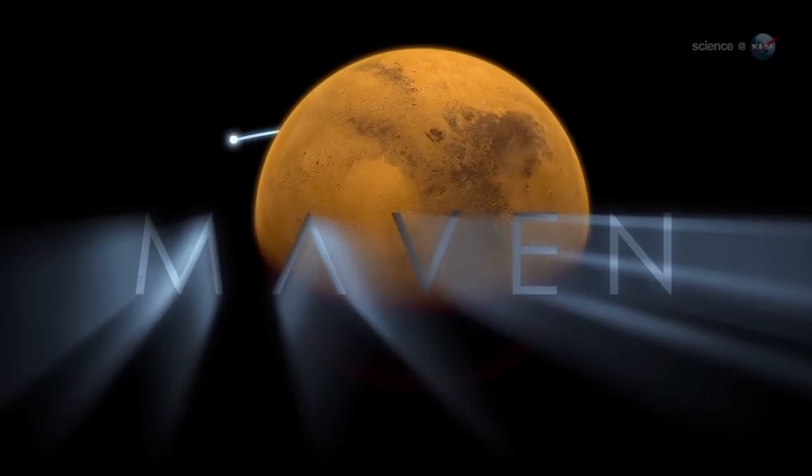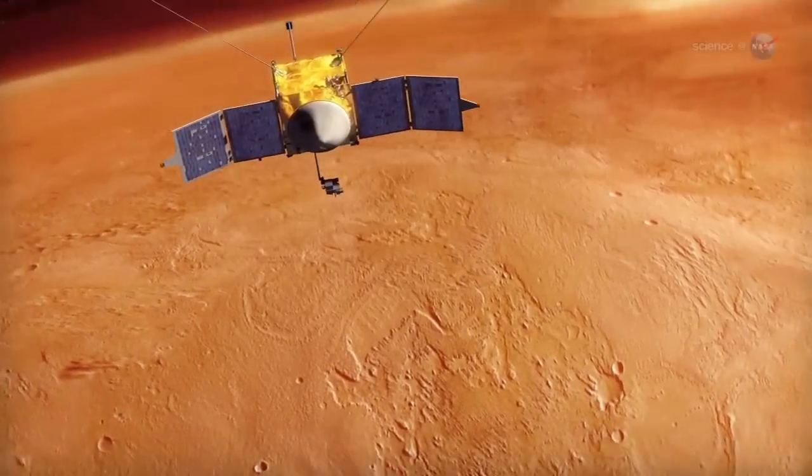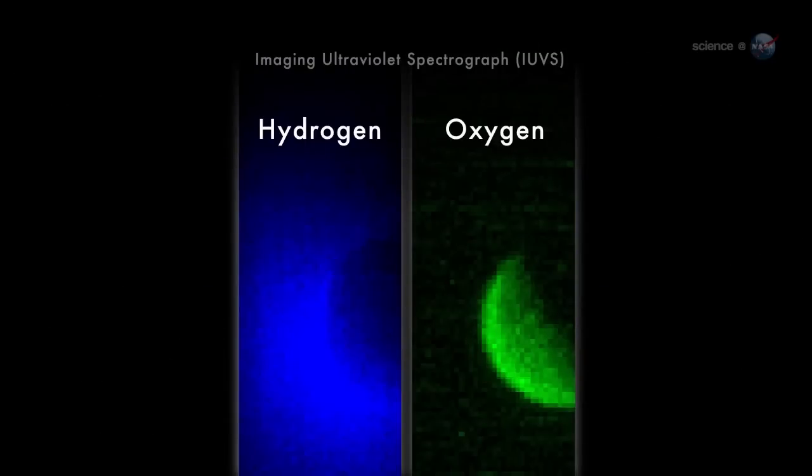MAVEN will attempt to answer the question by studying the upper atmosphere, where gaseous material could be lost to space. Schneider explains what the IUVS saw in its first look. The oxygen gas is held close to the planet by Mars' gravity, while lighter hydrogen gas expands to higher altitudes and extends past the edges of the image. These gases come from the breakdown of water vapor and carbon dioxide in Mars' atmosphere.